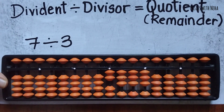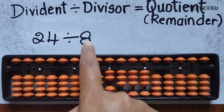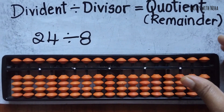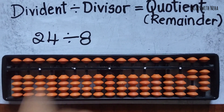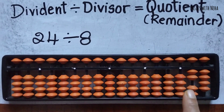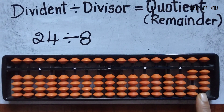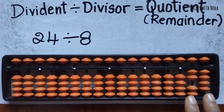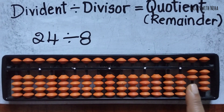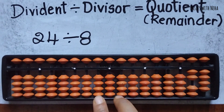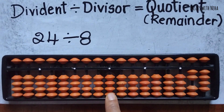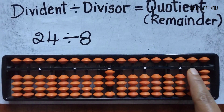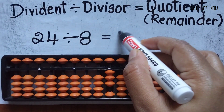Now, two-digit dividend divided by one-digit divisor. Clear the tool and place 24 in the dividend side. We divide by 8. The first digit is 2, which is smaller than 8, so I consider two rods. The last rod in the dividend side is where I place the answer in the quotient side. Eight 3s are 24, so the answer is 3 with zero remainder.